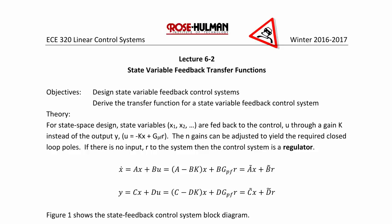The state equations x dot equals ax plus bu gpf r, or a tilde x plus b tilde r. y equals cx plus du becomes c minus dkx plus d gpf r, or c tilde x plus d tilde r.